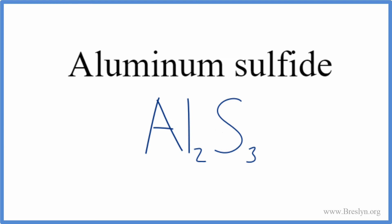But let's check our work just to make sure. So aluminum, that was 3 plus, and then sulfur 2 minus. So we have three sulfur atoms, each one's 2 minus. So 3 times the 2 minus, minus 6 for the sulfur,